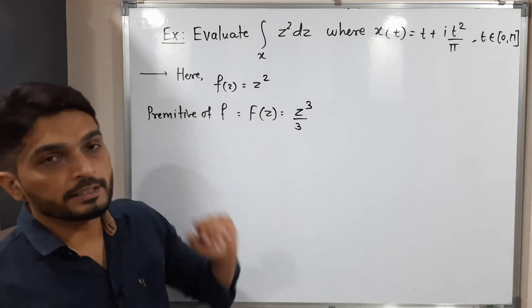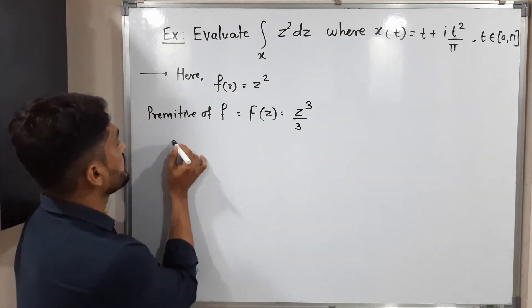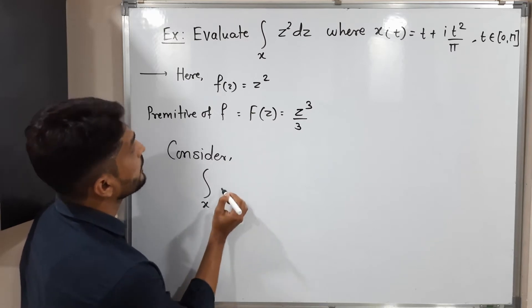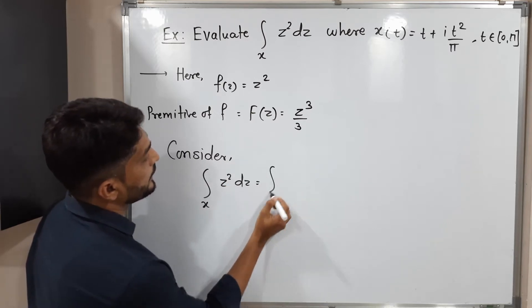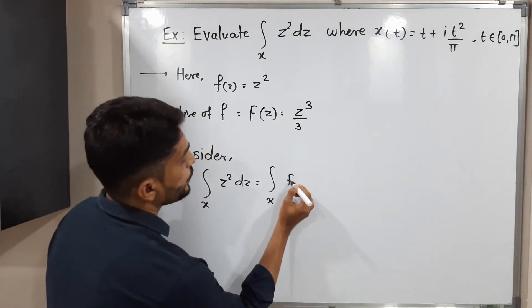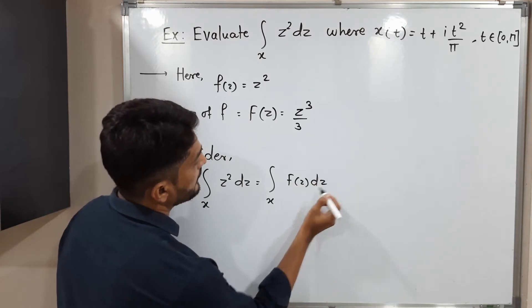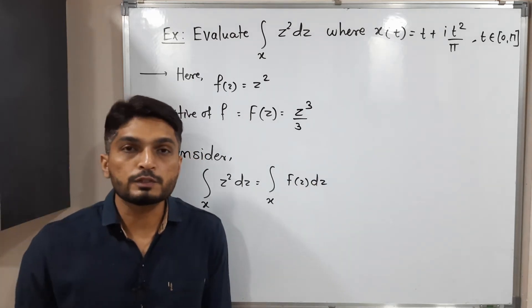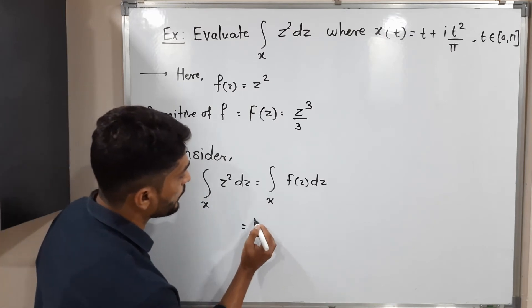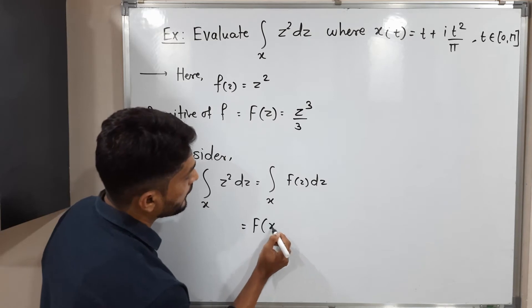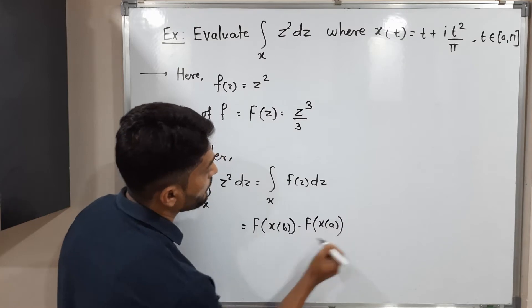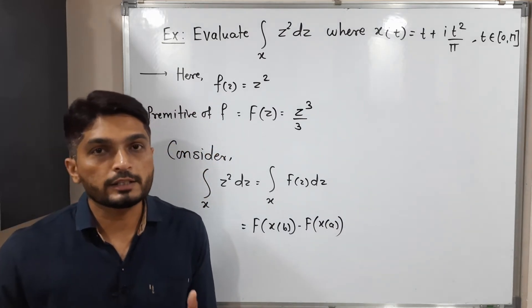Now let us consider the integration over X of Z square dZ. This integrand f of z dZ — I am going to use the result from our previous video. That result says this is equal to capital F of X of b minus capital F of X of a. You might be wondering what small a and small b are.